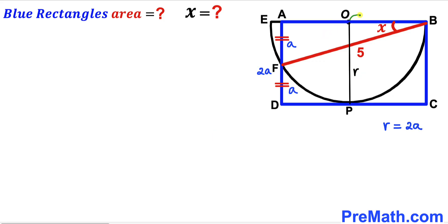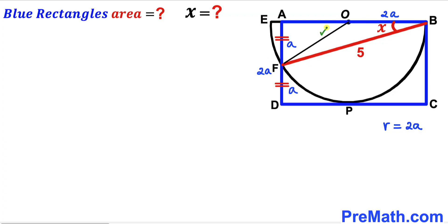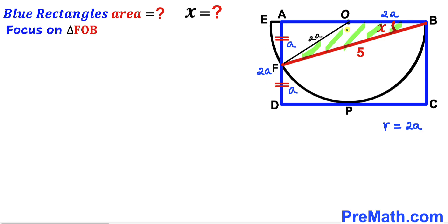OB is also a radius of the semi-circle, so OB equals 2a. Now I'll connect center O with point F. OF is also a radius, so OF equals 2a. Focusing on triangle FOB, we can see it is an isosceles triangle since both OF and OB equal 2a. Therefore the base angles are congruent — if one base angle is x, the other is x as well.